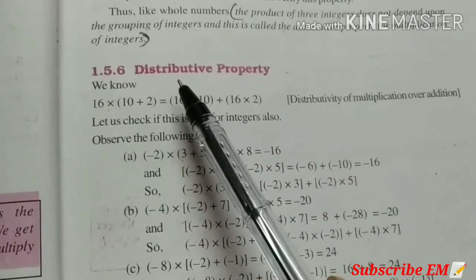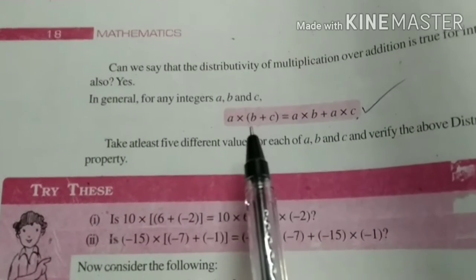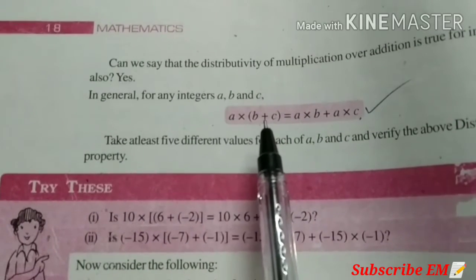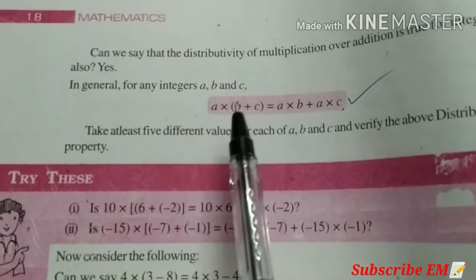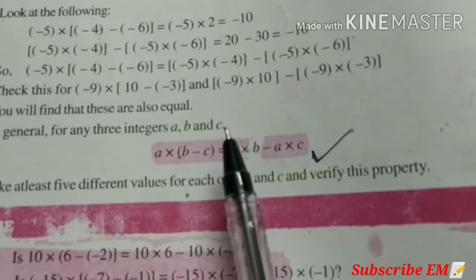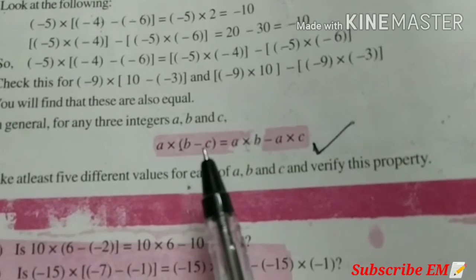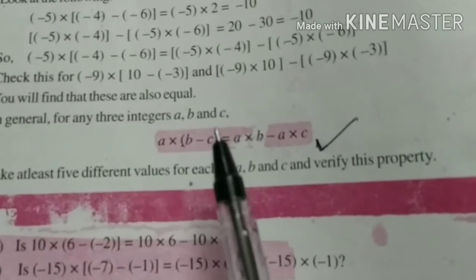Last, 6th property is distributive property. For any integers A, B and C, A into B plus C is equal to A into B plus A into C. This is distributivity of multiplication over addition. Like this, there is property for subtraction also. For any three integers A, B and C, A into B minus C is equal to A into B minus A into C. This is distributivity of multiplication over subtraction.